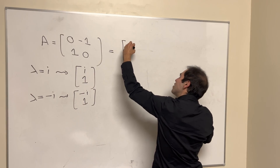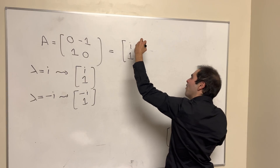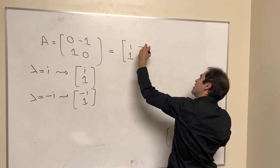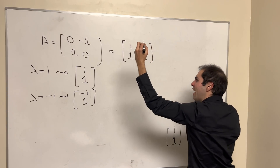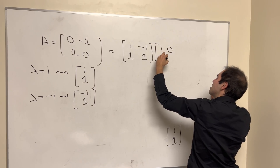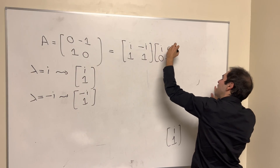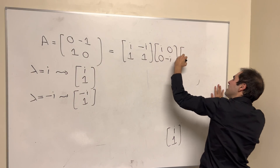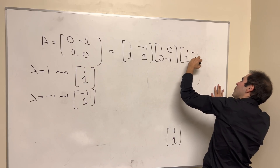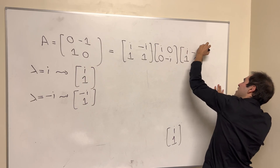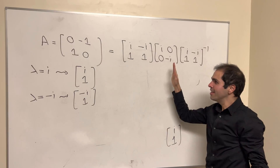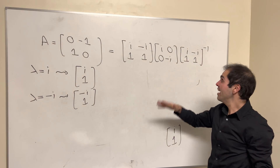And therefore, this matrix can be diagonalized as follows. You put your eigenvectors [[i, −i], [1, 1]], the eigenvalues [[i, 0], [0, −i]], and the inverse of [[i, −i], [1, 1]]. And this is A.